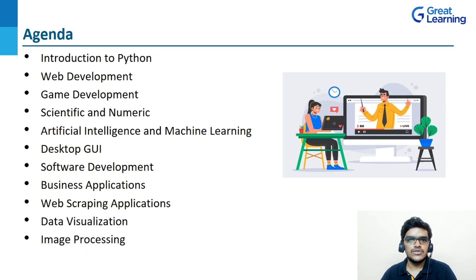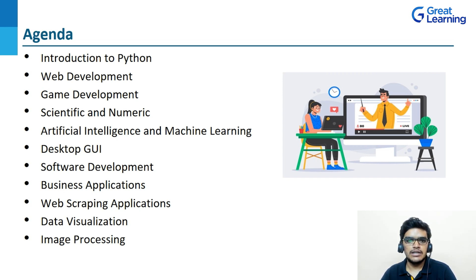So we will start from web development. After discussing web development, we will see what game development is. Then moving ahead, we will see scientific and numeric. And after that, we will be looking into artificial intelligence and machine learning. Moving forward, we will be discussing desktop GUI — basically a graphical user interface. Then coming to software development, Python is used as a supportive language by the software developer. Next, we are having business applications, as Python is used in business applications too.